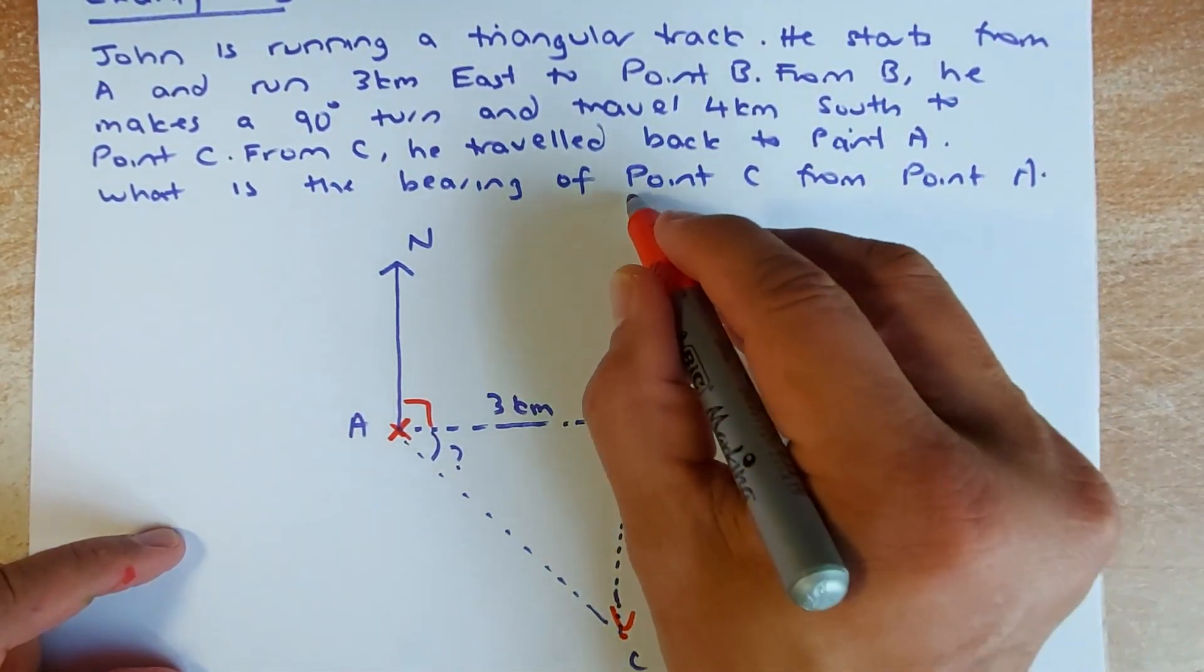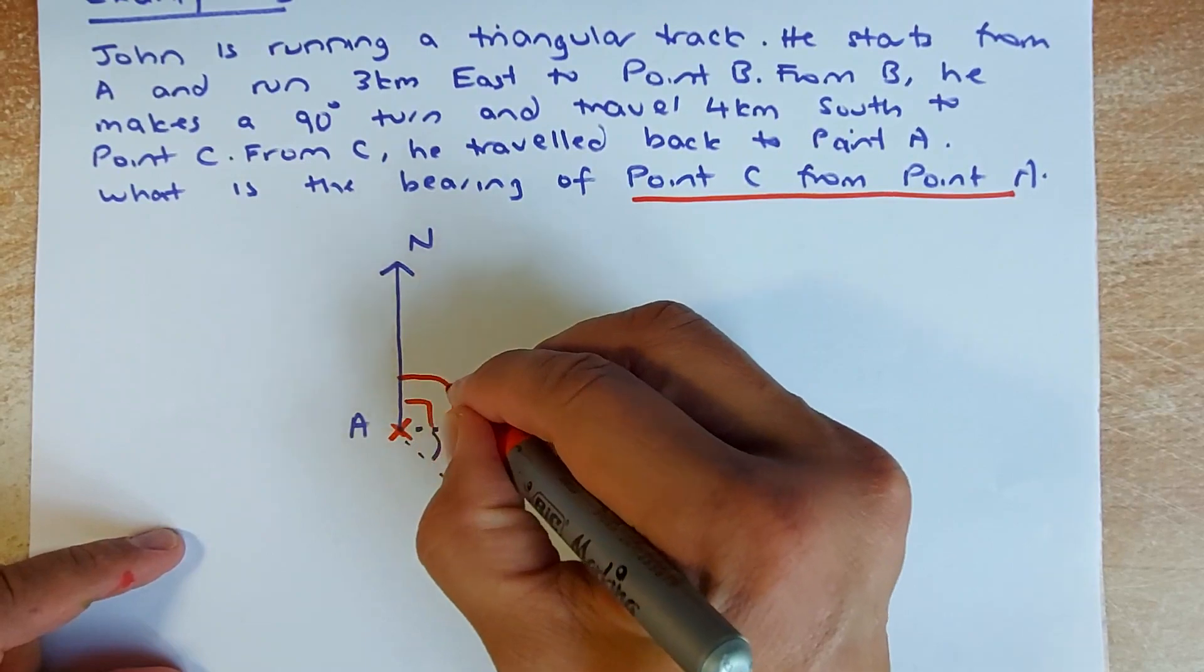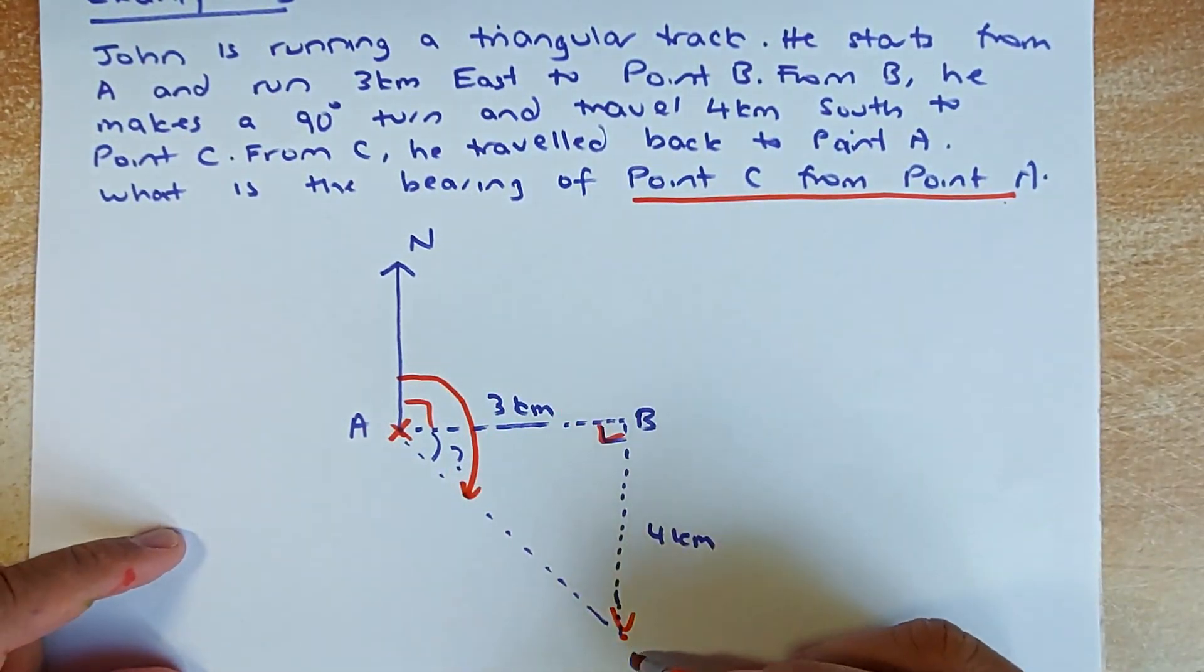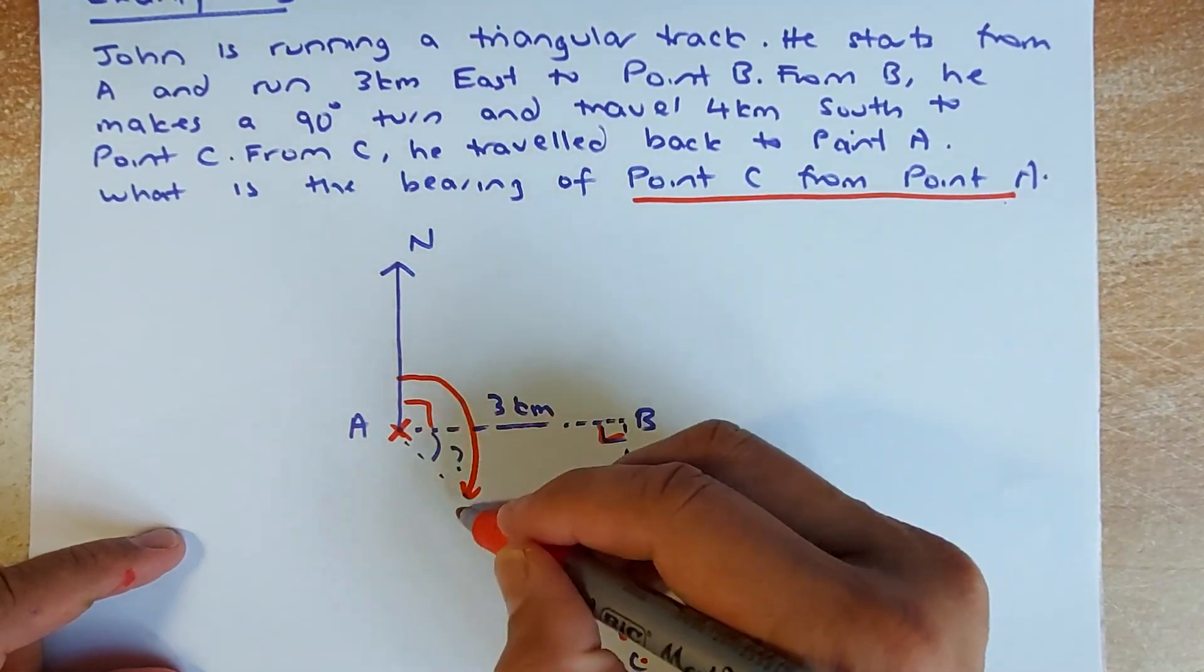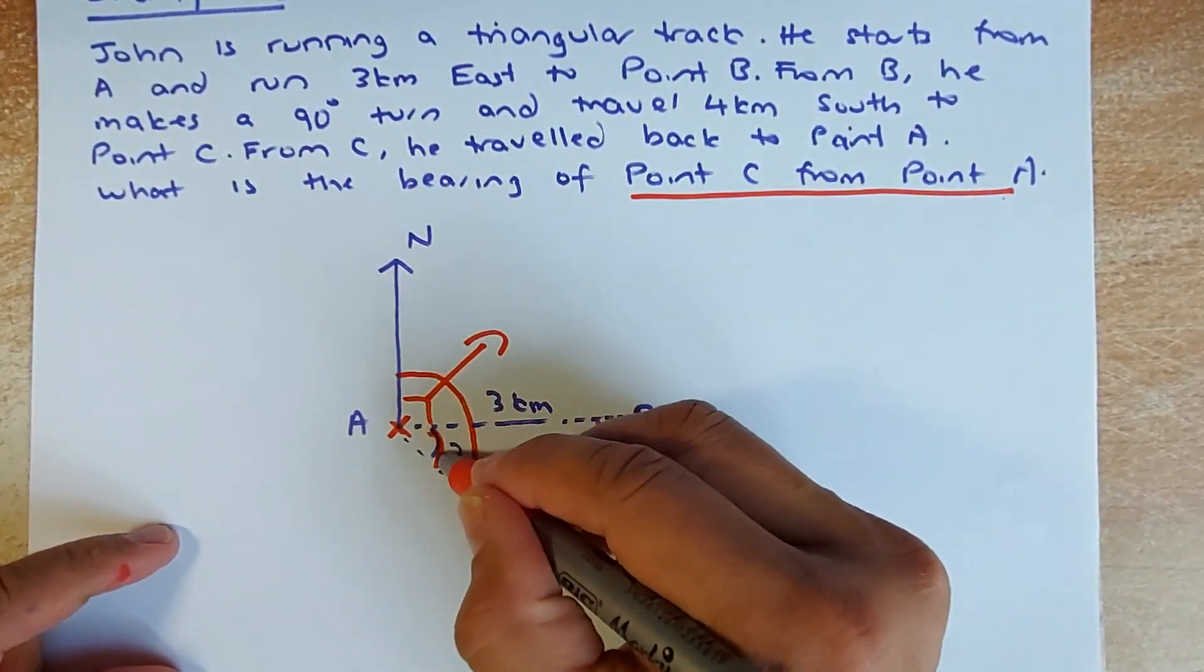The question asks you what is the bearing of point C from point A. So we are going to calculate the angle from here to here because it's from point A. So the bearing of C from point A is that angle there. We know that this is 90 degrees. We need to calculate that angle here.